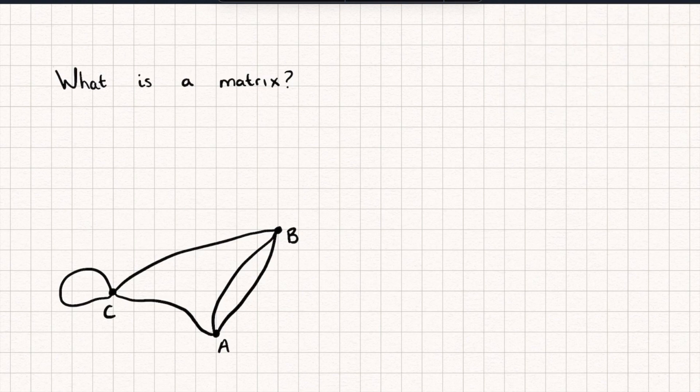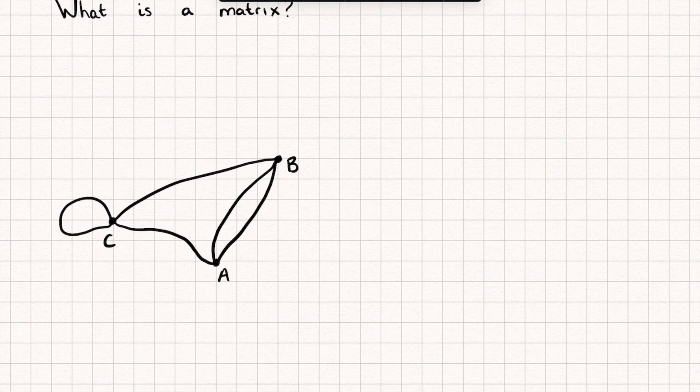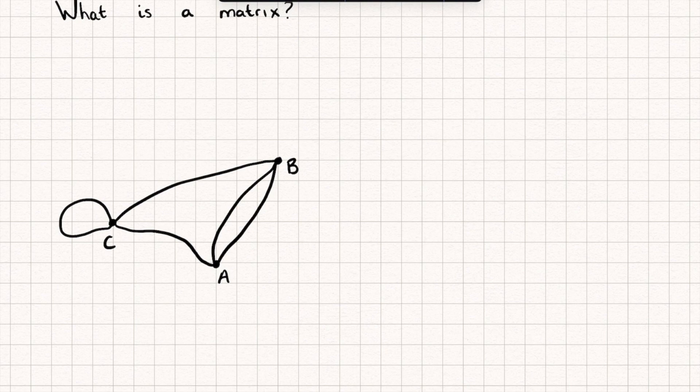Let's get some ideas as to where this idea of matrices might come from. You can see here we have a network, and this network has three towns on it, or three cities: A, B, and C. Between them, there are these roads connecting them. To get from A to B, there are two roads connecting us.